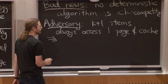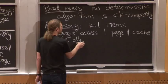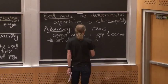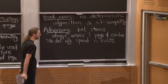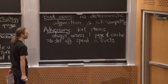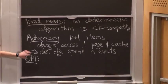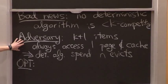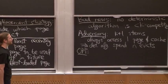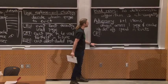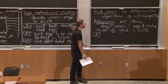The deterministic algorithm will spend n evictions if the access sequence has length n — it loses every time. Now we have to show OPT can do better on this sequence. For every algorithm there's a bad access sequence, but for that access sequence, there is a good algorithm. This is how competitive analysis works — you have to make sure your quantifiers are correct. The offline algorithm, knowing the sequence, can achieve an upper bound of n over k.